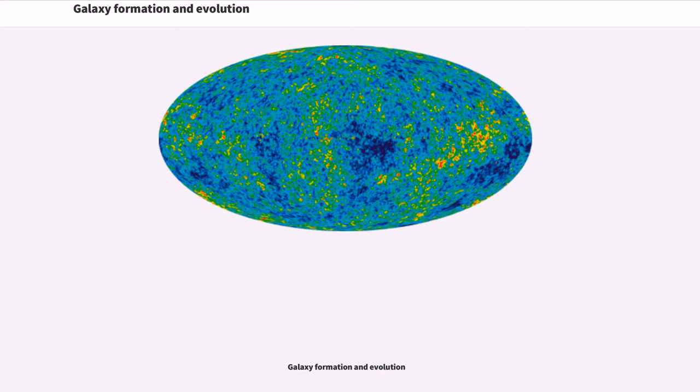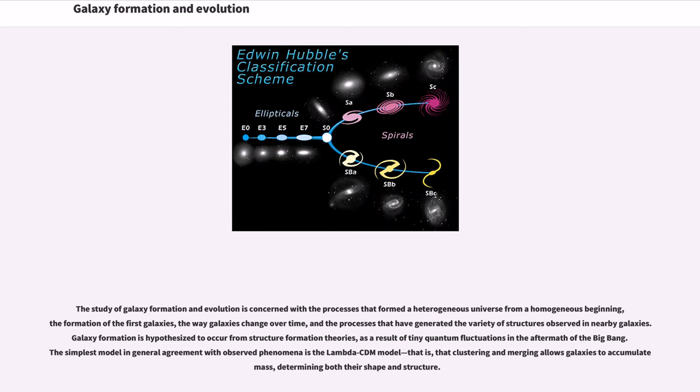Galaxy formation and evolution is concerned with the processes that formed a heterogeneous universe from a homogeneous beginning, the formation of the first galaxies, the way galaxies change over time, and the processes that have generated the variety of structures observed in nearby galaxies.